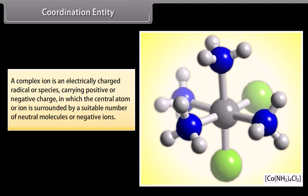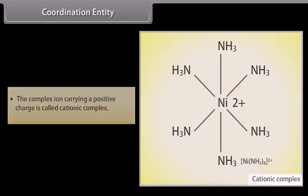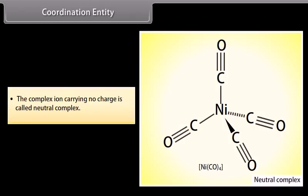Coordination Entity. A complex ion is an electrically charged species carrying positive or negative charge in which the central atom or ion is surrounded by a suitable number of neutral molecules or negative ions. For example, [Co(NH3)4Cl2]. The complex ion carrying a positive charge is called a cationic complex, e.g., [Ni(NH3)6]2+. The complex ion carrying a negative charge is called an anionic complex, e.g., [PtCl6]2−. The complex ion carrying no charge is called a neutral complex, e.g., Ni(CO)4.